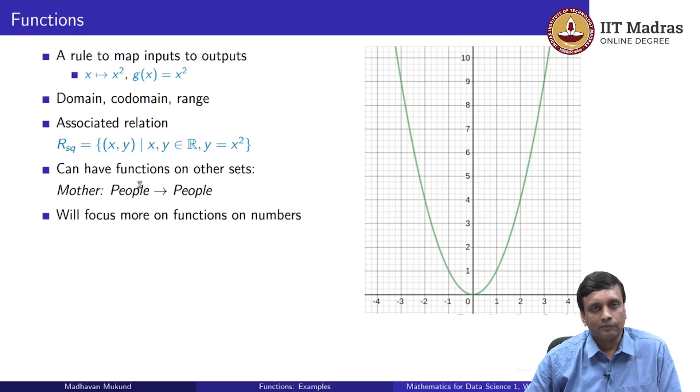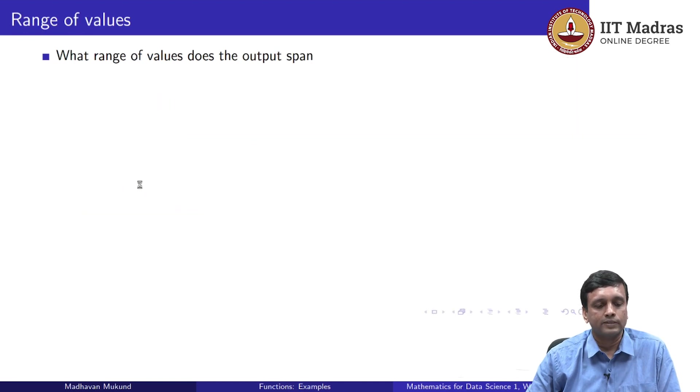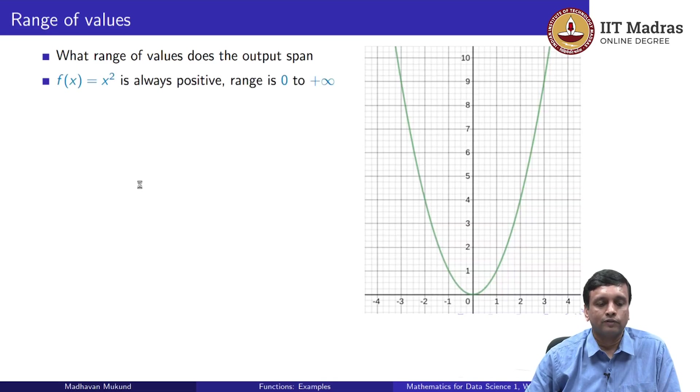So in this lecture and in general, when we are talking about functions in this course, we will look more at functions on numbers. So let us look at these a little more closely. What are the questions that we really want to ask about functions on numbers? So one of the basic questions is, what are the ranges of the values that we can get? In other words, we have a codomain, but what is the range of values that we can actually achieve through the function?